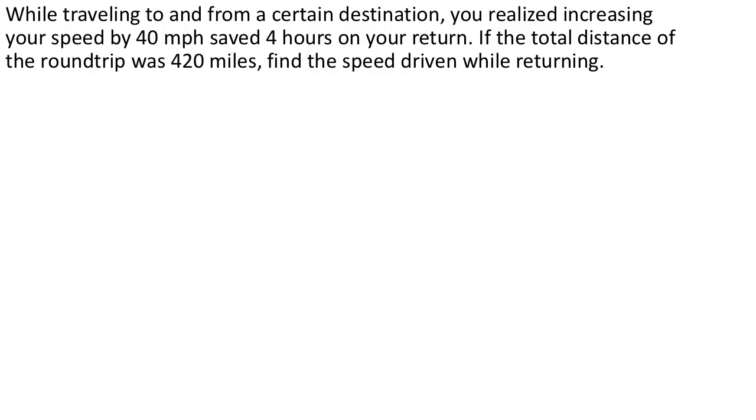In this problem, we are given some information about a round trip that was done at two different speeds, one speed on the first leg of the trip, and then another speed on the second leg of the trip. As you might expect, we're going to be using our distance equals rate times time formula, but once again, it's going to make a little more sense in this case to view it as time equals distance over rate.